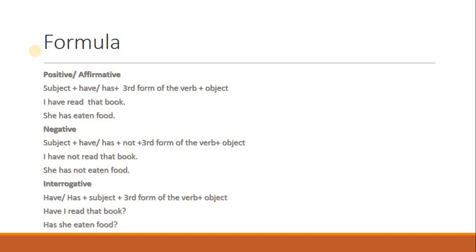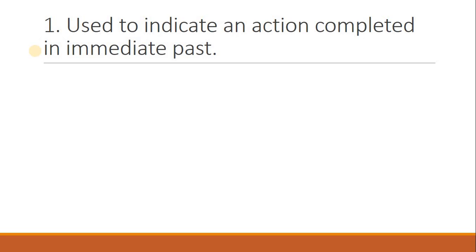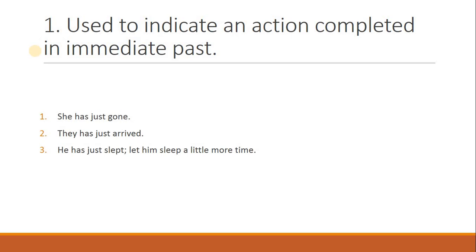اب دیکھتے ہیں کہ Present Perfect Tense کب اور کیسے use ہوتا ہے۔ First: Present Perfect Tense is used to indicate an action completed in immediate past — یعنی ابھی ابھی جو کام ہوا ہو۔ اس کے لیے just use کرتے ہیں۔ For example: she has just gone — وہ ابھی ابھی گئی ہے۔ They have just arrived — وہ ابھی ابھی پہنچے ہیں۔ He has just slept — وہ ابھی ابھی تو سویا ہے۔